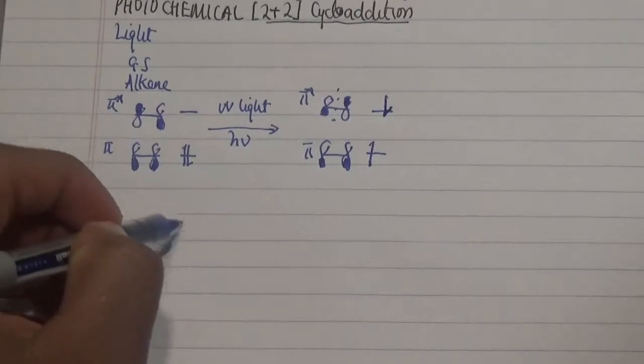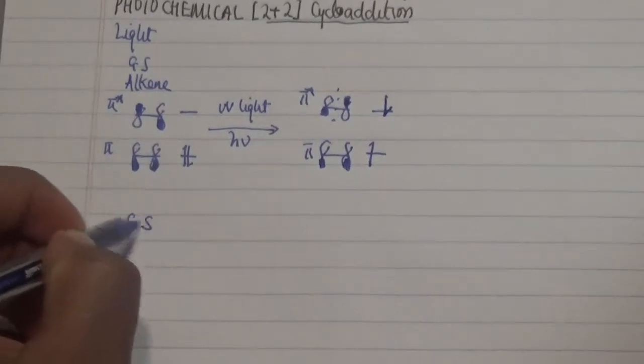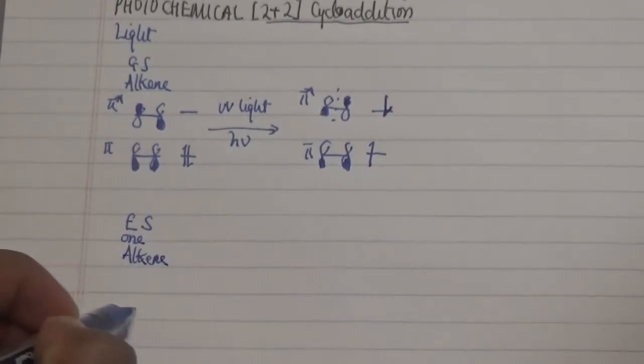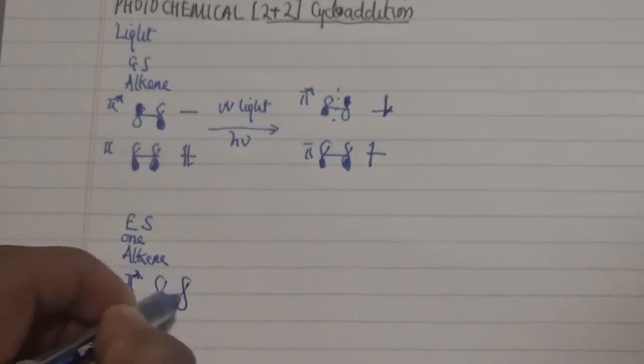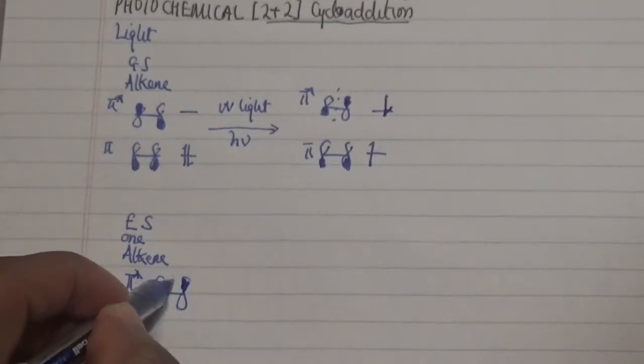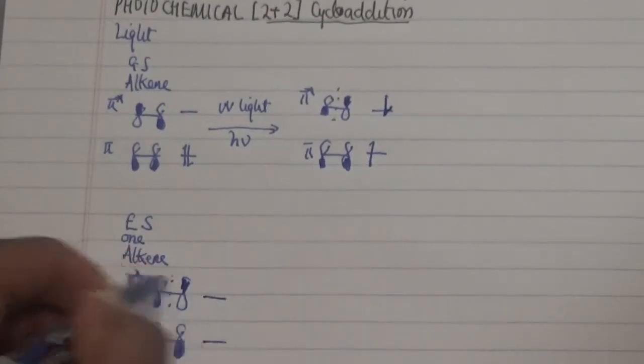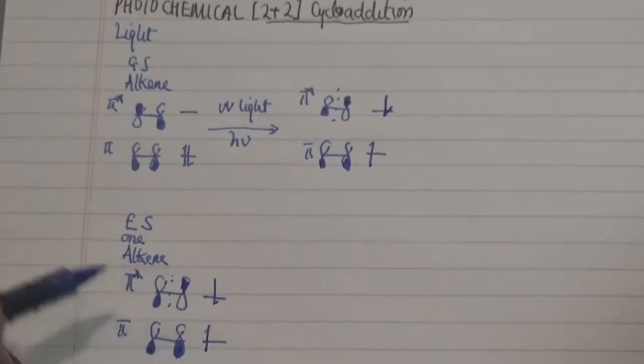In one case where we have our excited state of one alkene, what we have is a π*, which is the HOMO. Once you excite this, you have electrons up and down. It doesn't matter how I do it as long as it is out of phase.